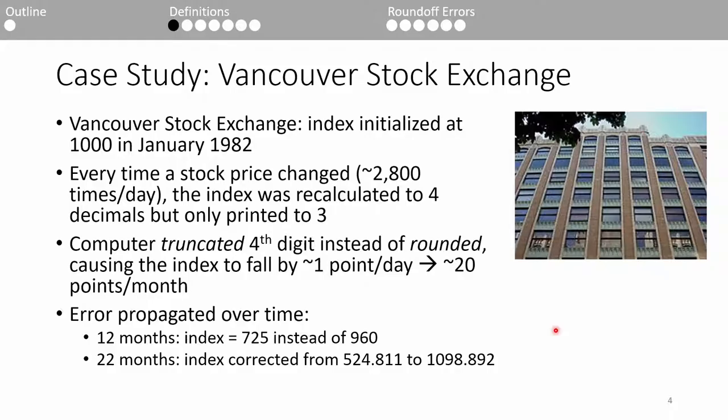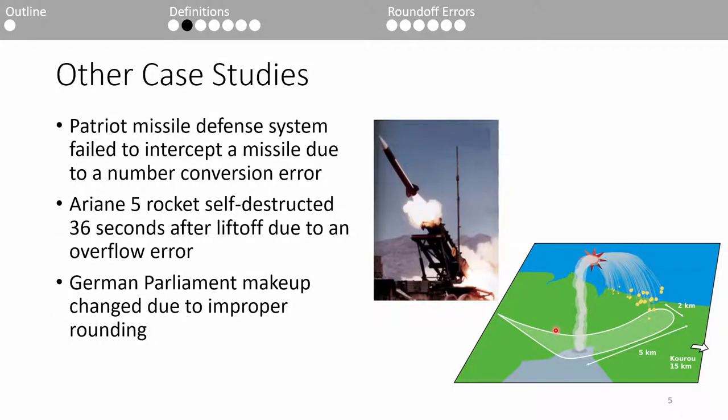As you can expect, this really confused everyone since the stock prices were the same, so people didn't really know why the index more than doubled. Long story short, this left a huge dent in their reputation, and they eventually merged into the current-day Canadian Stock Exchange. This is a great example of how an error so seemingly small, only four decimal places, can potentially cause billions of dollars in damage if left unchecked. Here's some more interesting case studies arising from numerical errors. I won't go over them. You can look them up at your own leisure, but I hope these illustrate the significance of understanding errors.